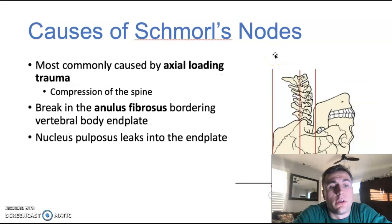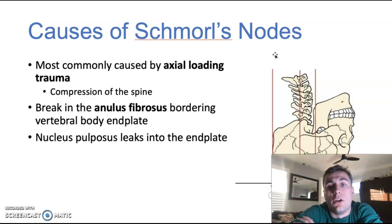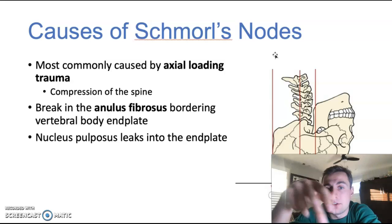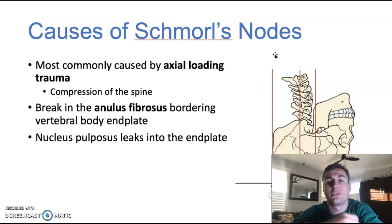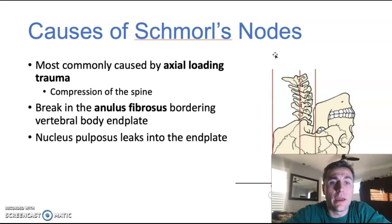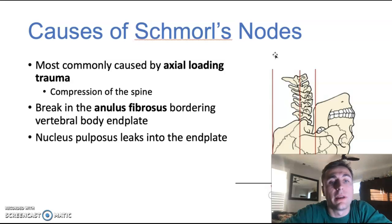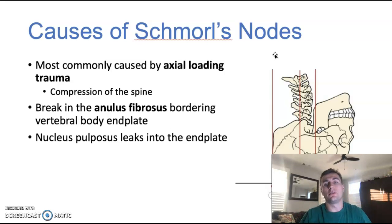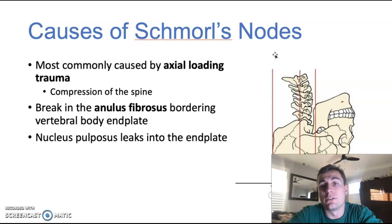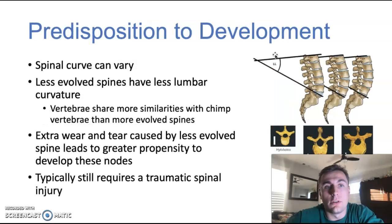The biggest cause of Schmorl's nodes is axial loading trauma — just compression of the spine. That's where you can get head blows, diving into shallow water, jumping off a high surface — anything that really compresses the spinal cord is going to tear away at that annulus fibrosus bordering the vertebral body end plate. The nucleus pulposus will then leak out either above or below, depending on where that tear is, and can start leaking into those vertebrae, which can be potentially dangerous.